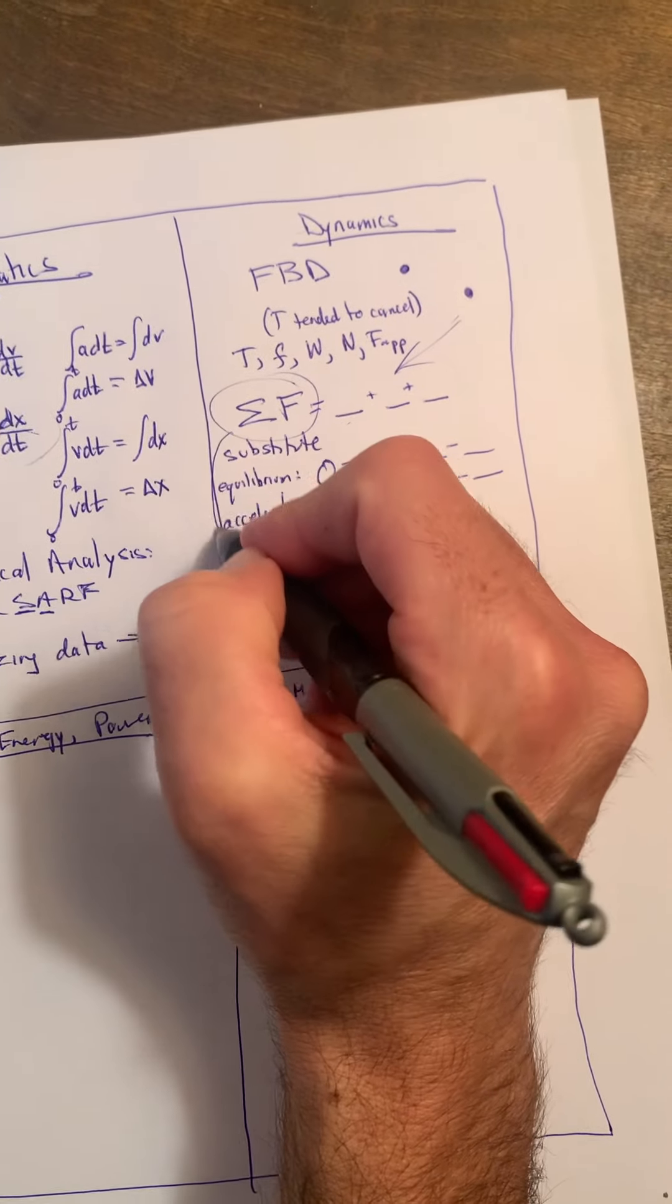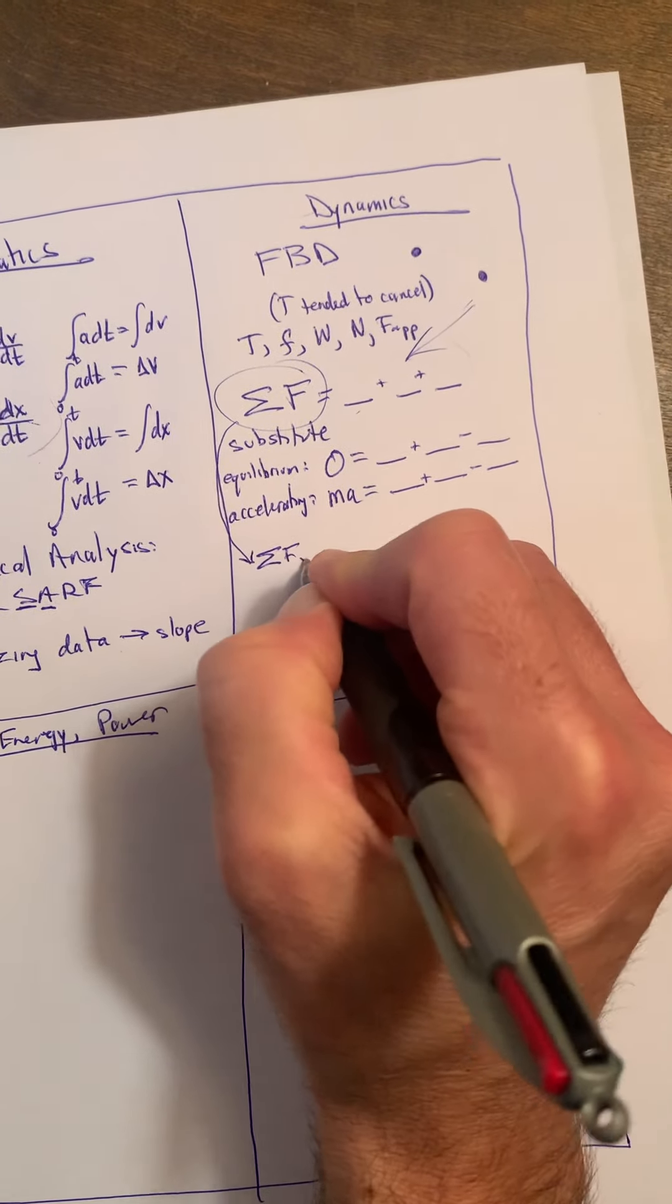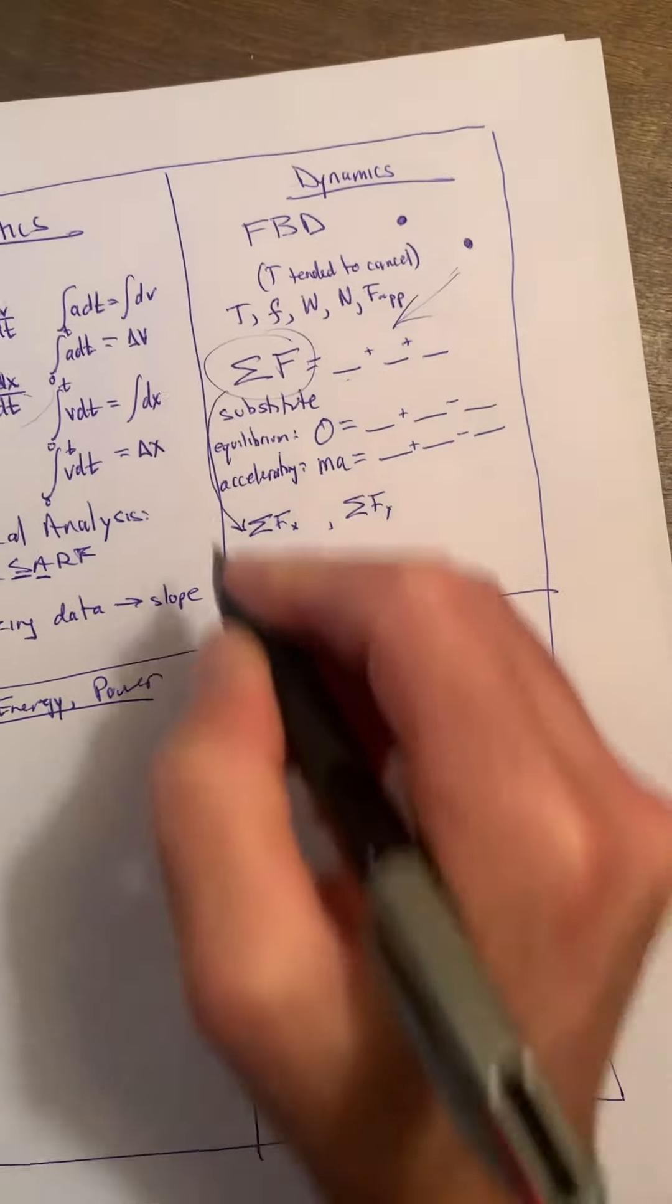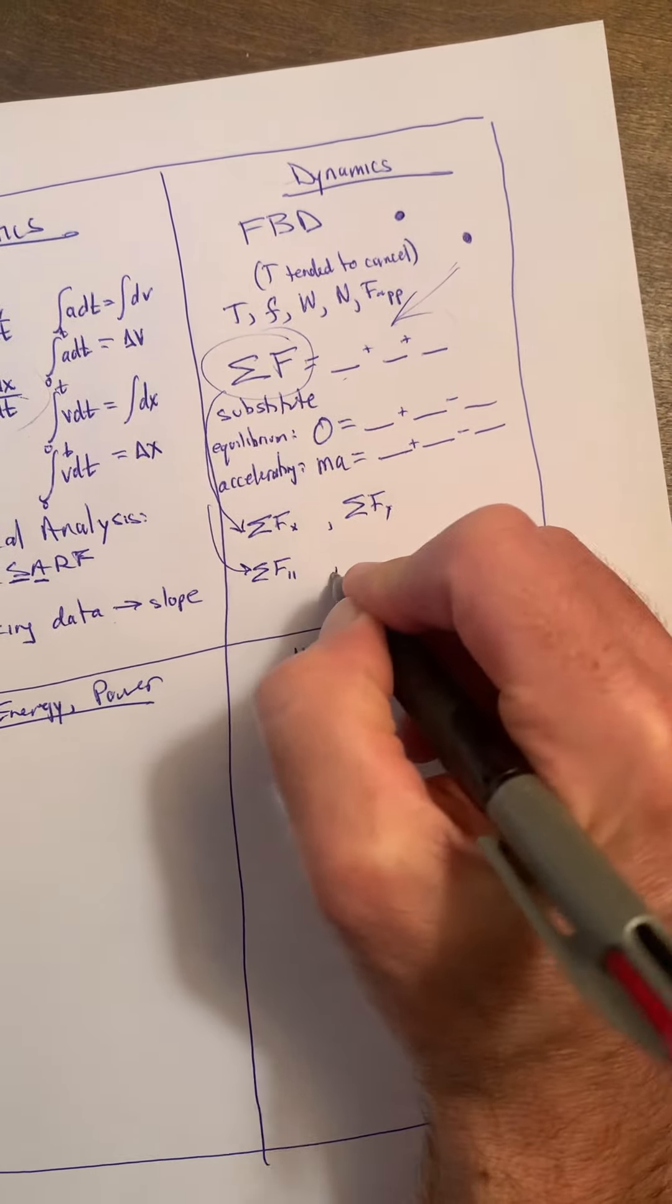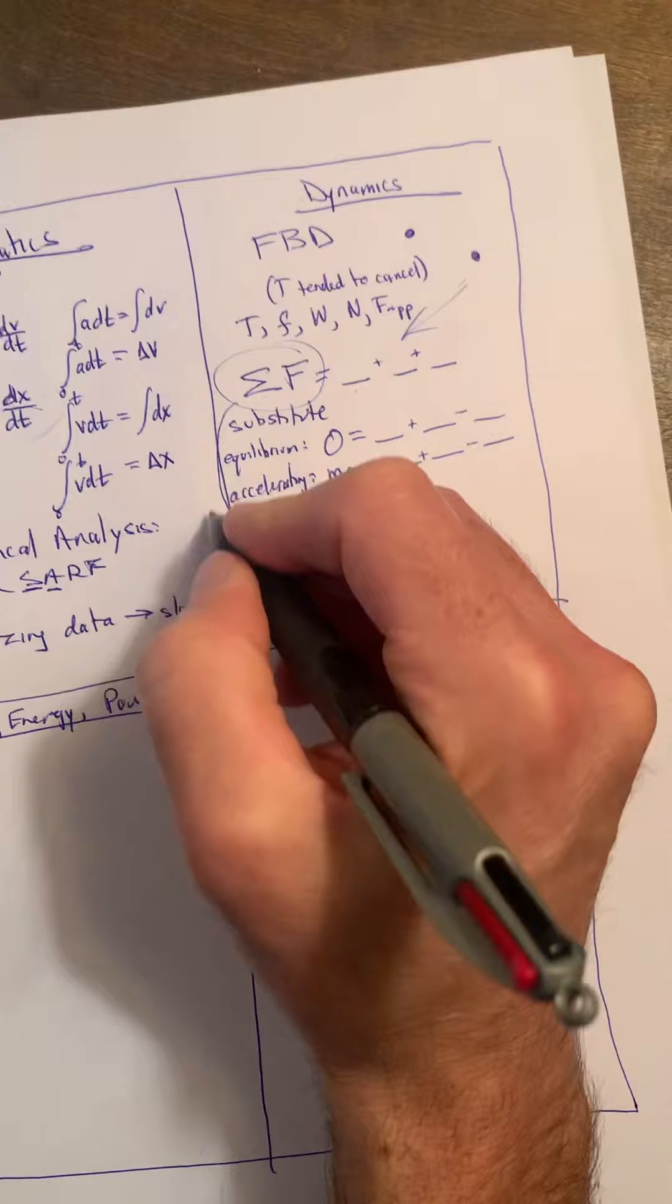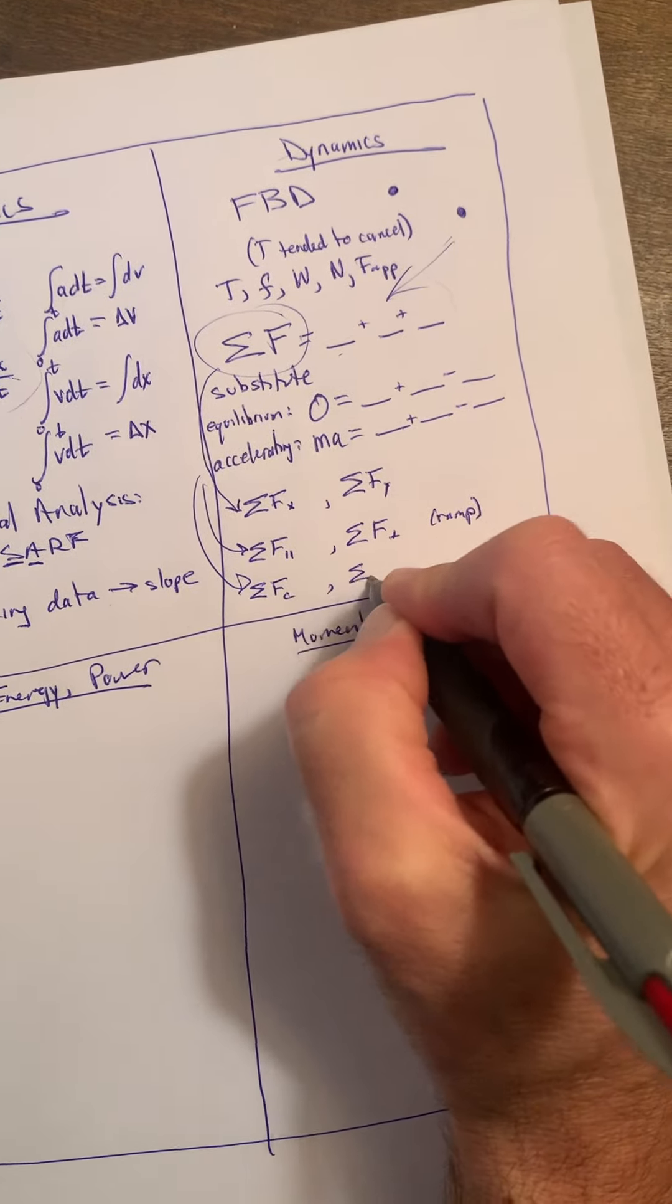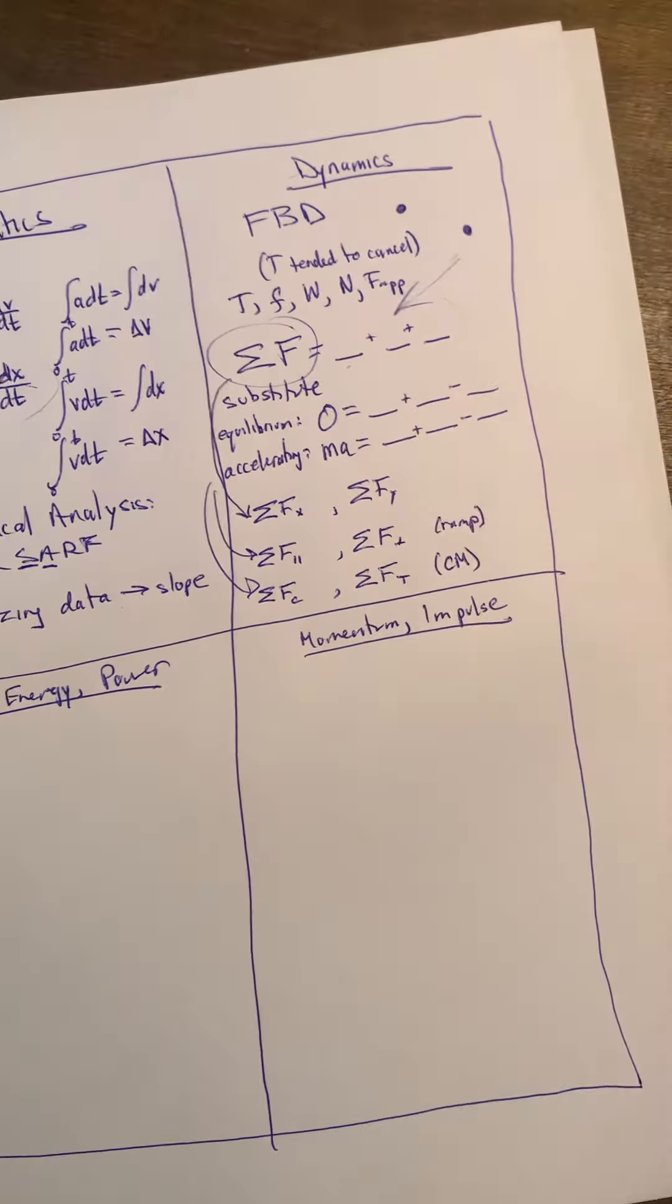The other piece to keep in mind here was that sometimes our sum of forces were given in multiple dimensions. So you might have a sum of forces in the x and the sum of forces in the y, that was a common one. Another common one was a sum of forces parallel and a sum of forces perpendicular, that tended to show up on the ramp. And a common one was circular motion: sum of forces centripetal and a sum of forces tangential. This was circular motion.